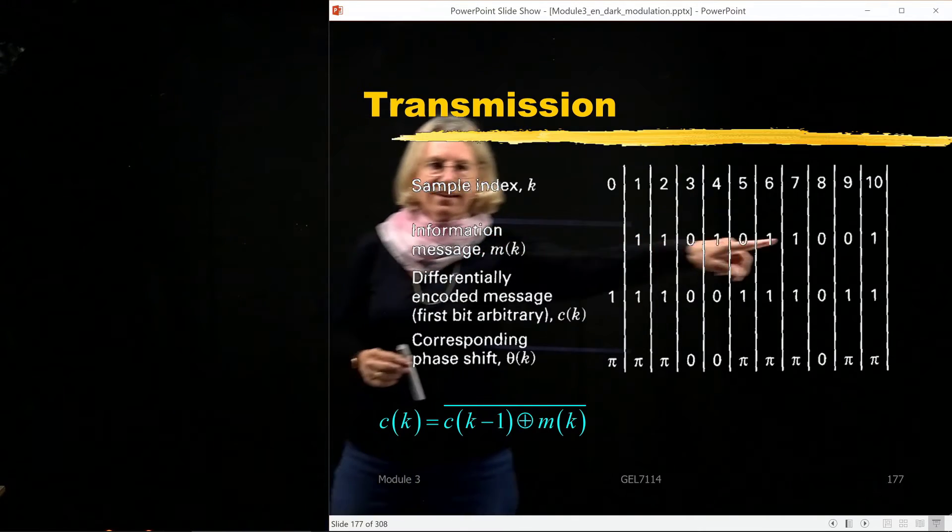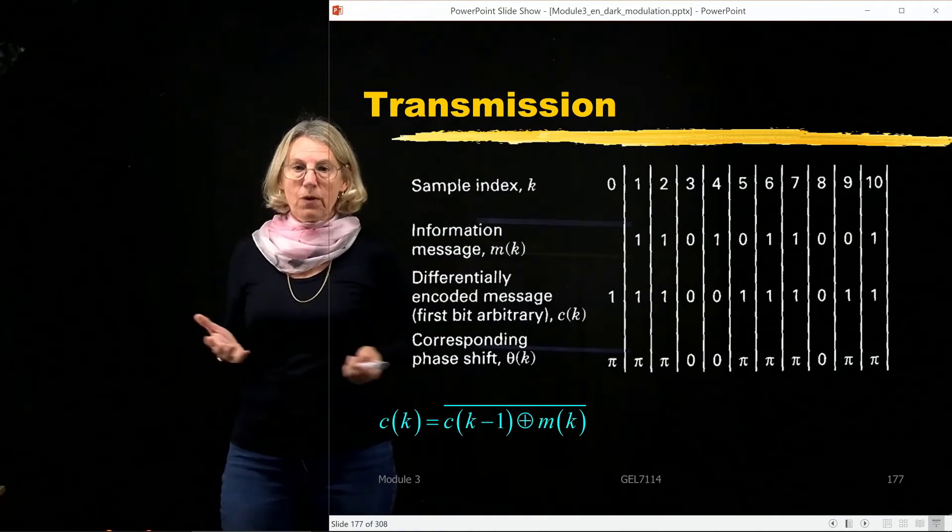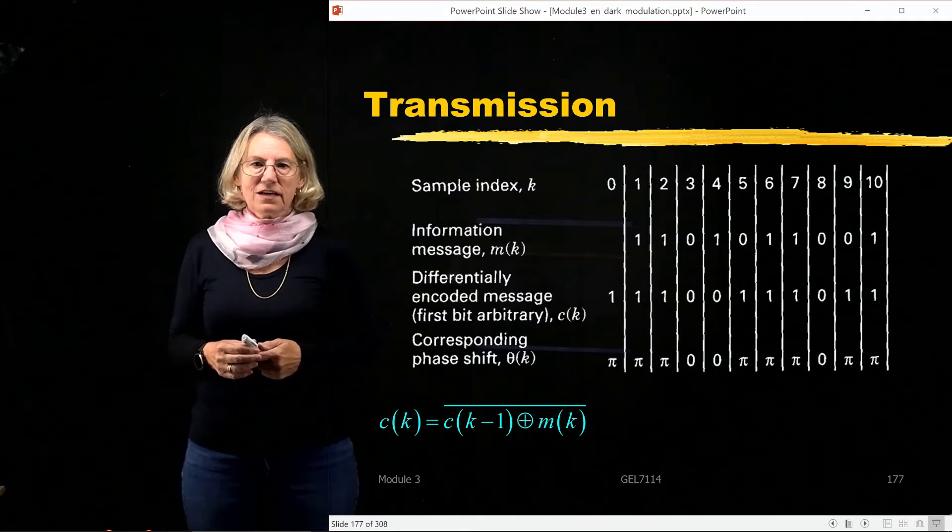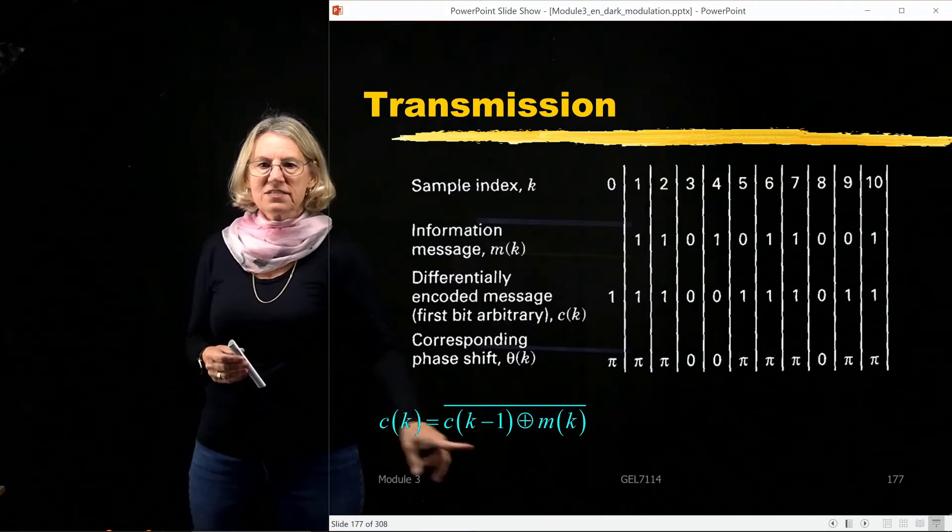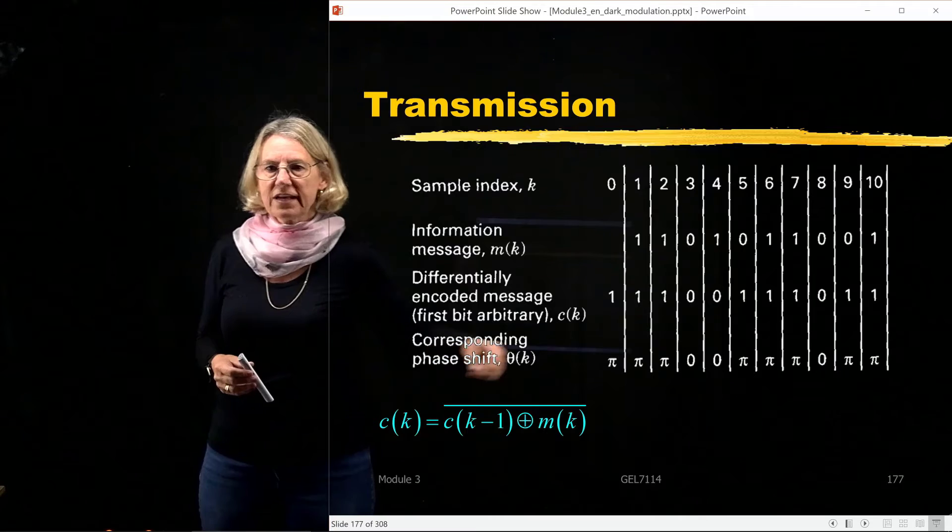because I'm going to pre-code it so that this difference in the phase will work. So in this line, I have my message, my binary message I want to transmit, and what I'm going to do is use this operation, this Boolean operation,